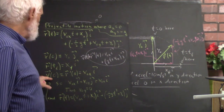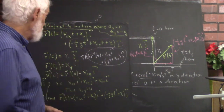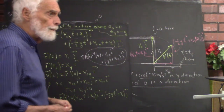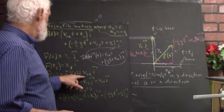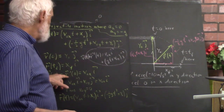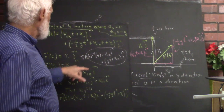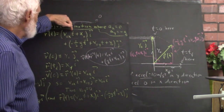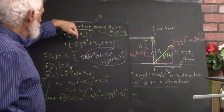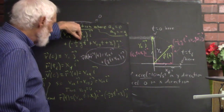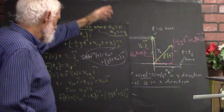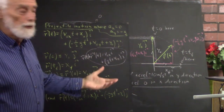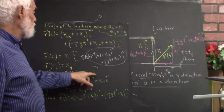The velocity v of zero is r-prime of zero — velocity is the derivative of position, the rate of change of position. Taking the derivative of r gives the v function. The derivative of v-naught-x times t plus x-naught is just v-naught-x. The derivative of the y-component is just negative g-t plus v-naught-y. So r-prime of zero equals v-naught-x times i.